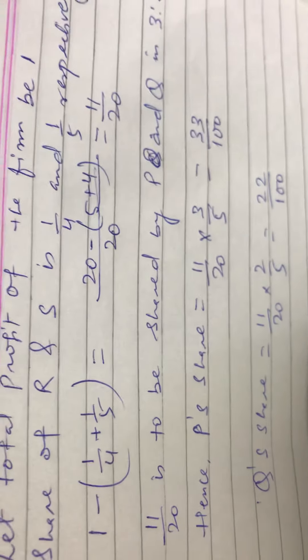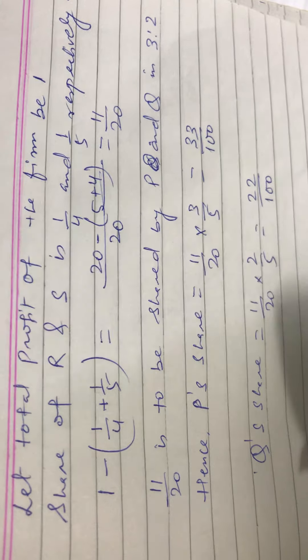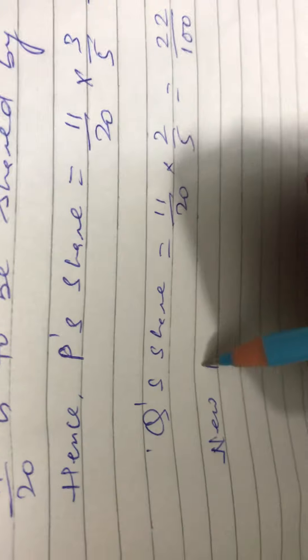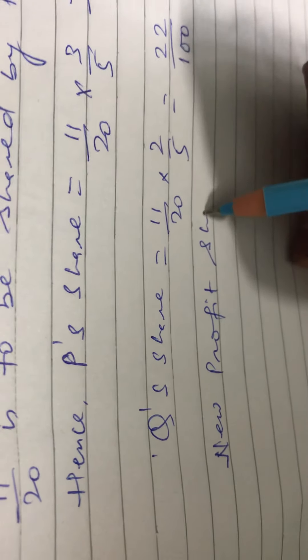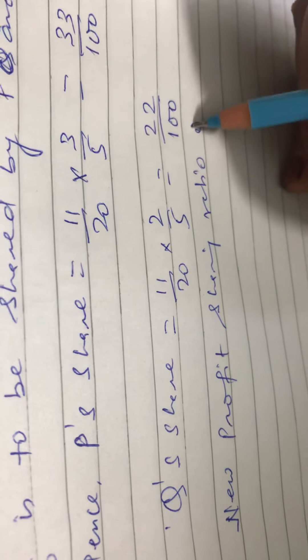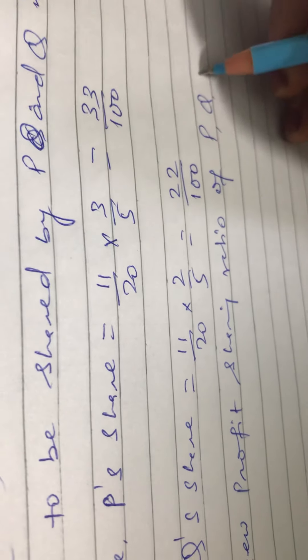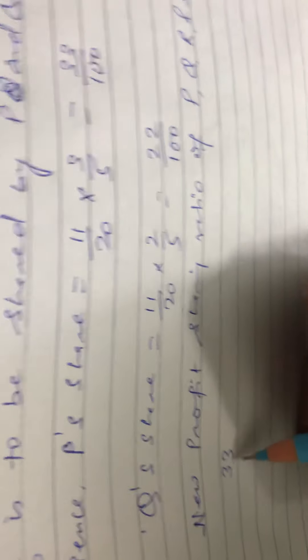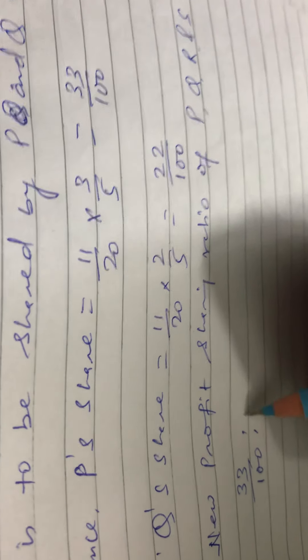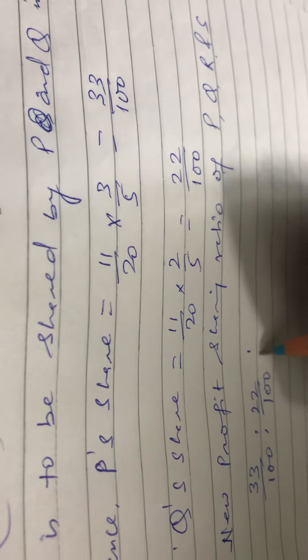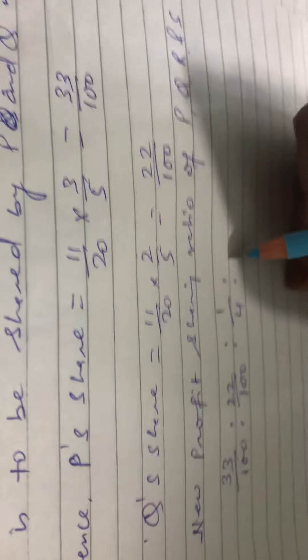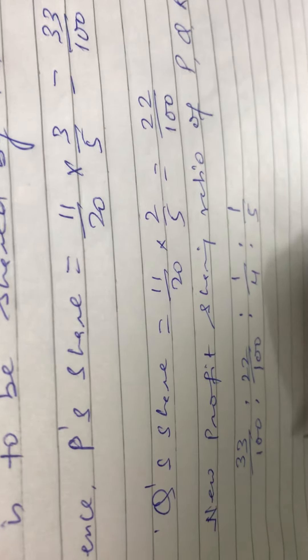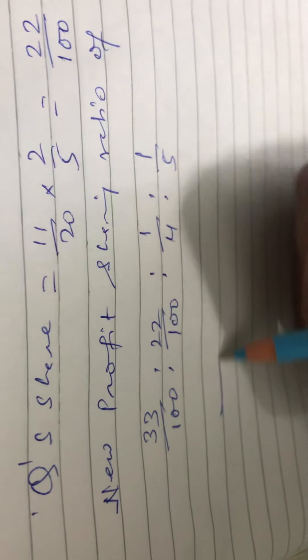New profit sharing ratio of P, Q, R, and S will be 33/100 is to 22/100 is to 1/4 is to 1/5. Here base is not equal, so we have to equal the base.